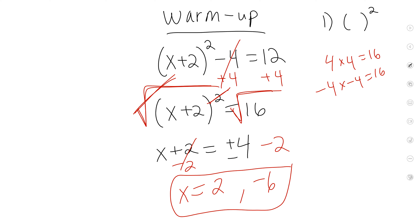How would I check to make sure these are right? You could plug it in. If I plug in negative 6 right here, what's negative 6 plus 2? Negative 4 times negative 4 minus 4 is 12. So that worked. Let's plug in a 2 this time. What's 2 plus 2? 4 squared is 16, minus 4 is 12. So both of those answers, when you plug it in, it makes sense.